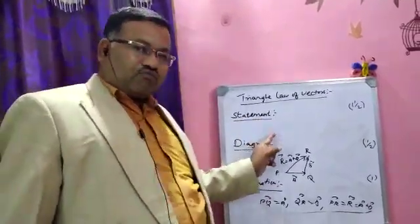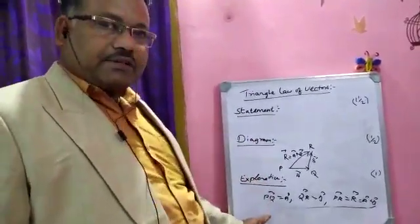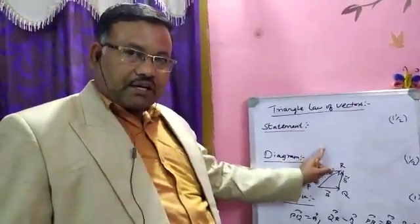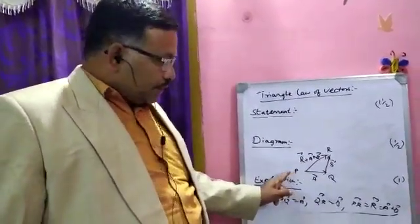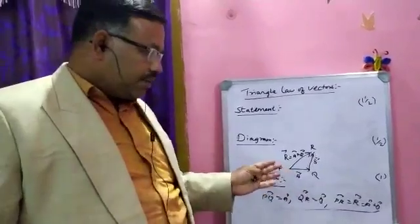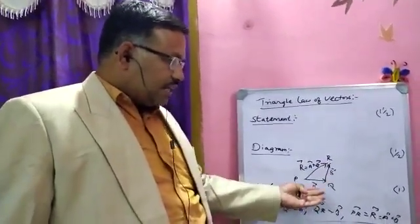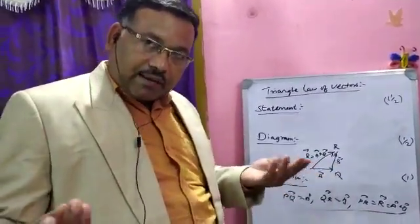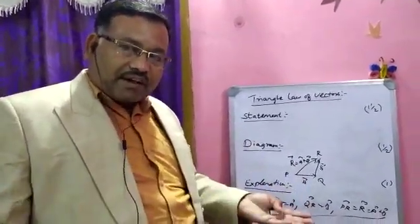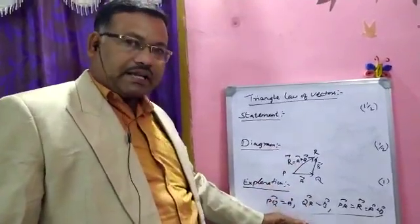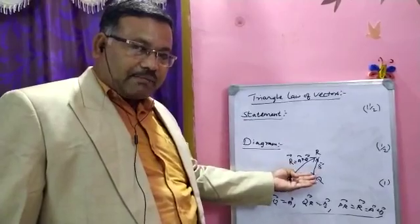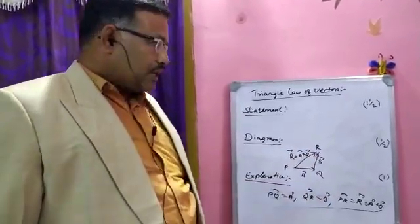This question contains three parts: statement, diagram, and explanation. You have to write the statement without any mistake. For the diagram you can give any name — I have given PQR, but you can also give ABC. I have used vectors A and B, but you can also name them P and Q. Whatever name you use in the diagram, the same letters should be used in the explanation.